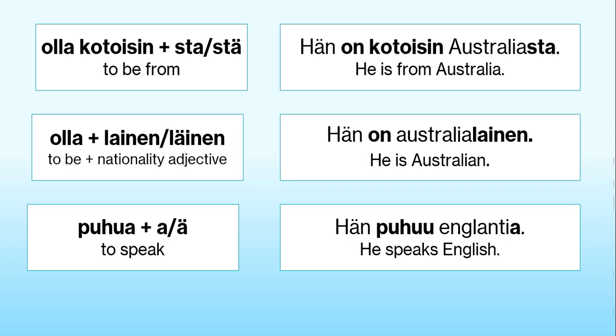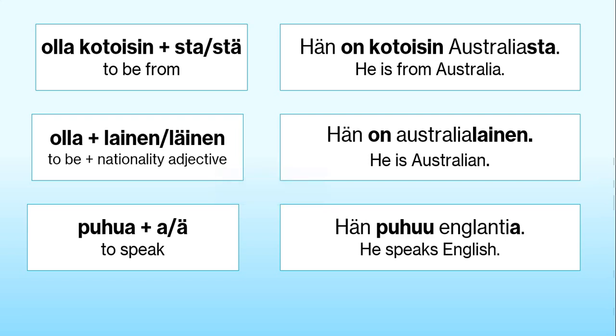There are a few exceptions. For example, if the name of the country ends with a consonant, you'll need to add the letter I as well. For example, Iraq — irakilainen. And then when you talk about languages, you'll need the verb to speak, which is puhua.